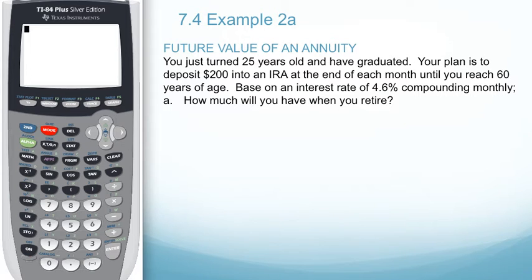Let's look at using technology to solve example two. You just turned 25 years old and have graduated. Your plan is to deposit $200 into an IRA at the end of each month until you reach 60 years of age. Based on an interest rate of 4.6% compounding monthly, how much will you have when you retire?